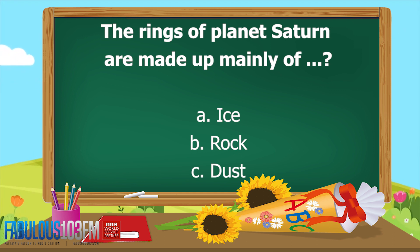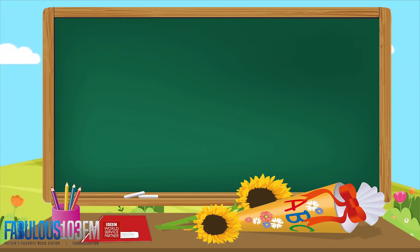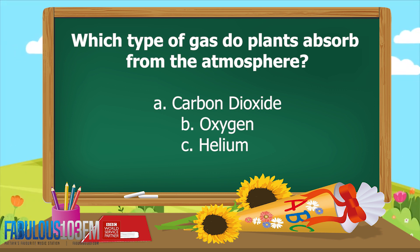New questions for you today — back to the solar system. The rings of planet Saturn are made up of mainly what? Is it A: ice, B: rock, or C: dust? And the second question for today: which type of gas do plants absorb from the atmosphere?